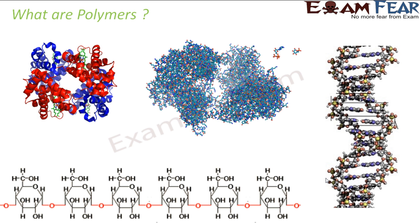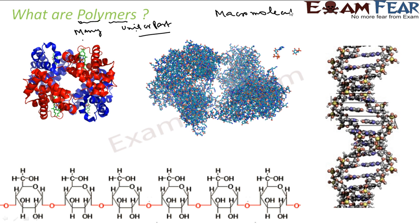The first question that comes to our mind is: what are polymers? The word 'poly' means many, many, and 'mers' means unit or part. So many parts, many units — that is called a polymer. A polymer is nothing but a large molecule, because it has many units. It is also called a macromolecule. It consists of repeated units.